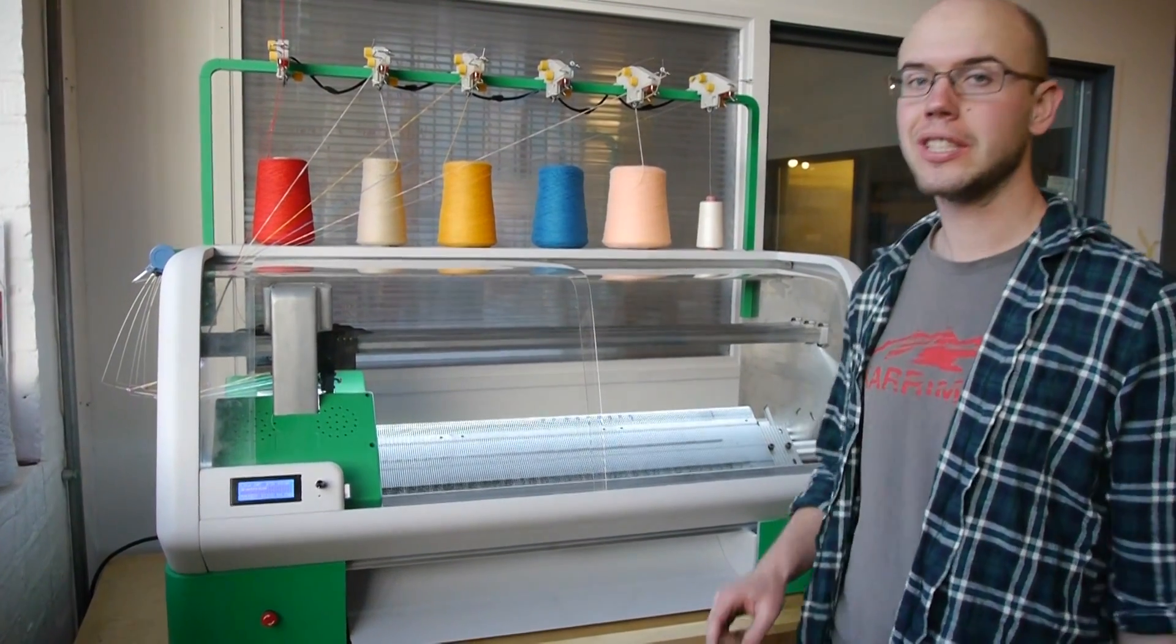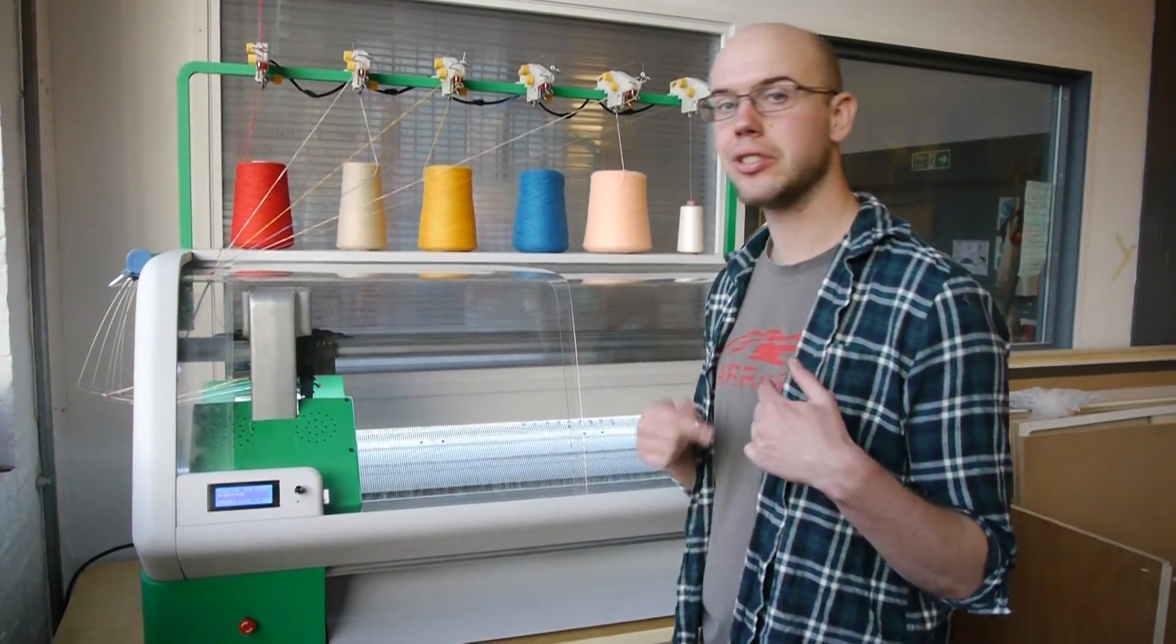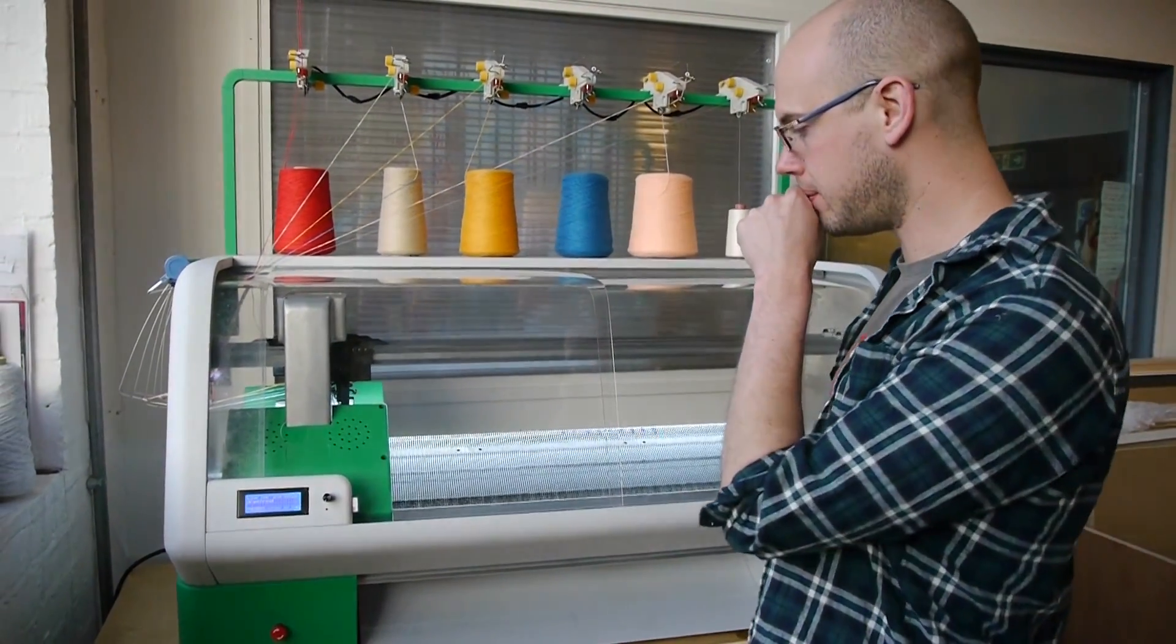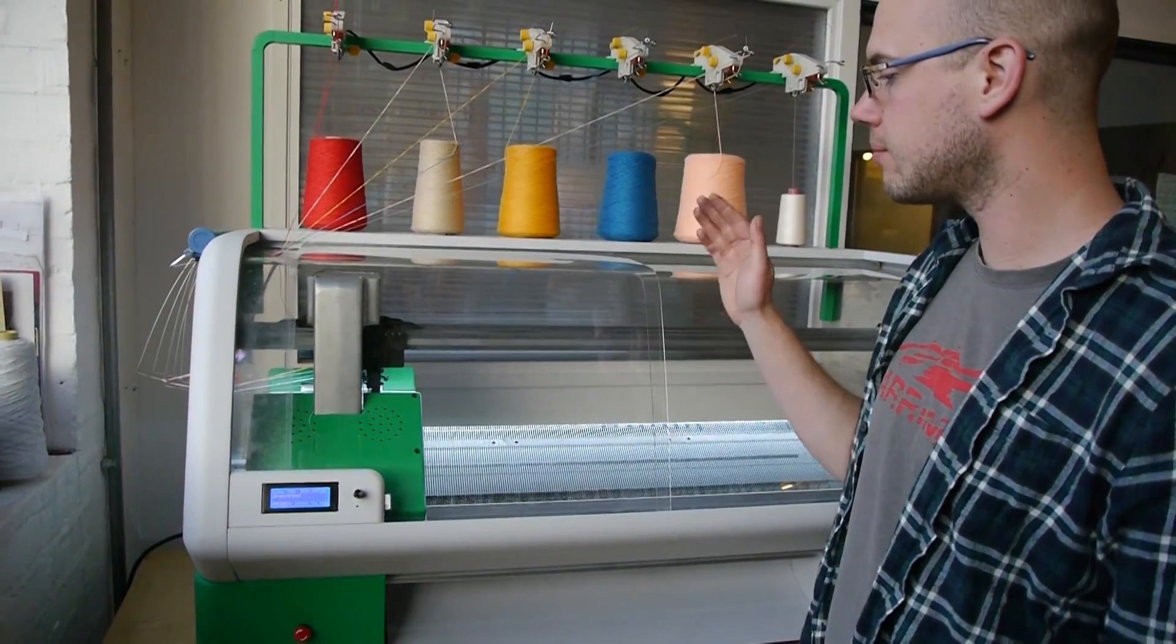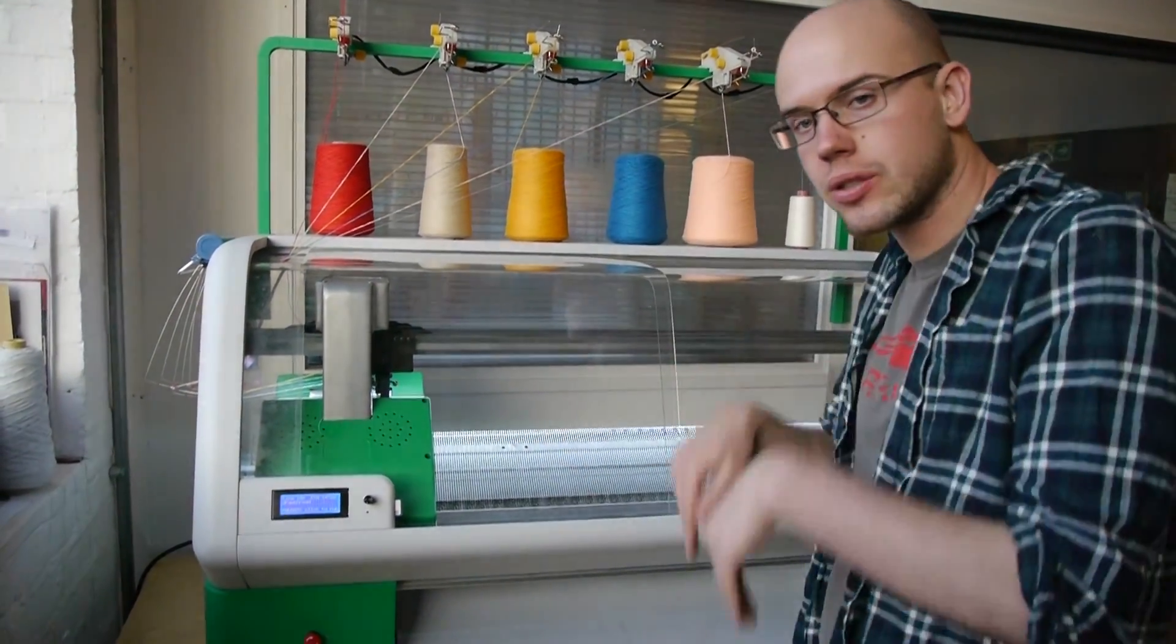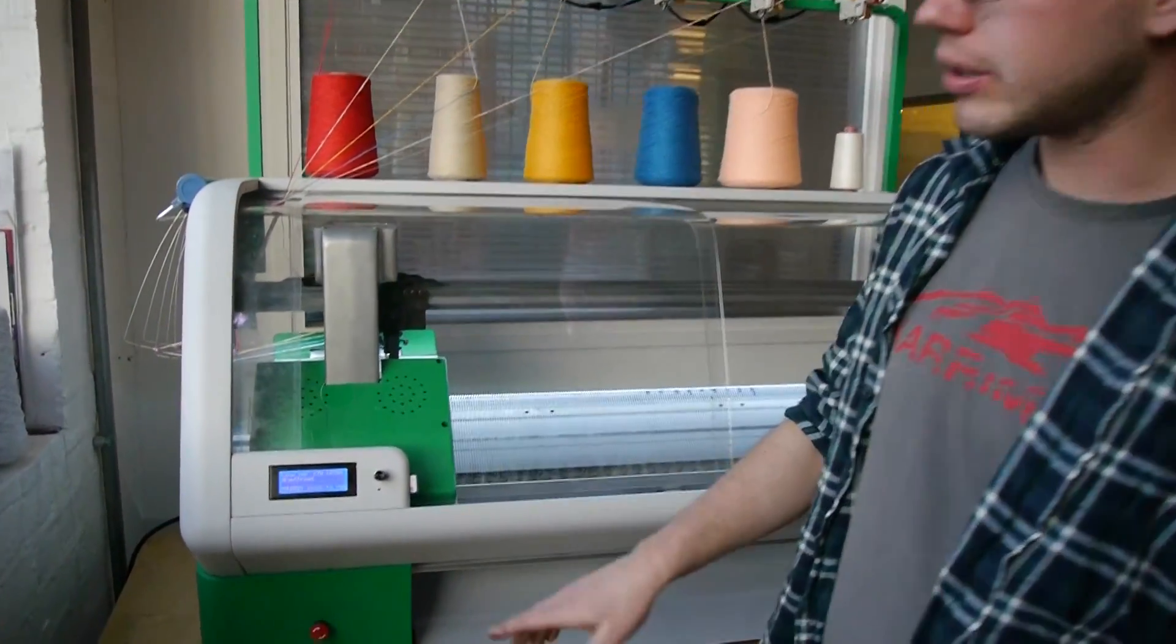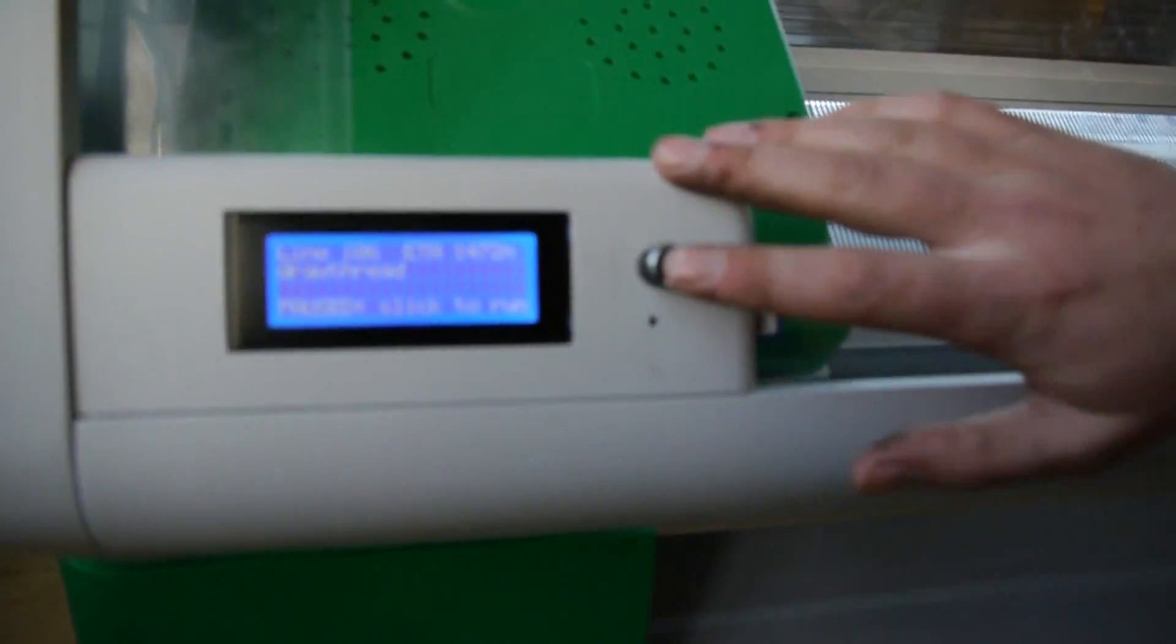So for the purpose of this video, we told the machine to stop in between each of these operations, but normally it would just carry on by itself. So it's done the waste yarn now, so the waste is all down inside the rollers and the tension is good, and now it's about to do the draw thread.